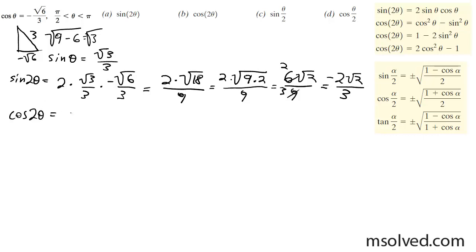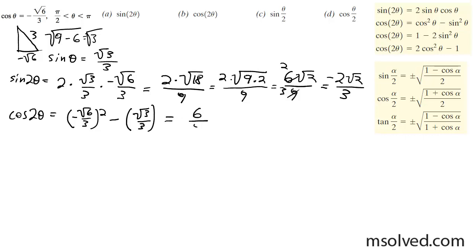Cosine of 2 theta equals cosine squared minus sine squared. That's negative square root of 6 over 3, squared, minus square root of 3 over 3, squared. This equals 6 over 9 minus 3 over 9, which is 3 over 9, simplifying down to 1 third.